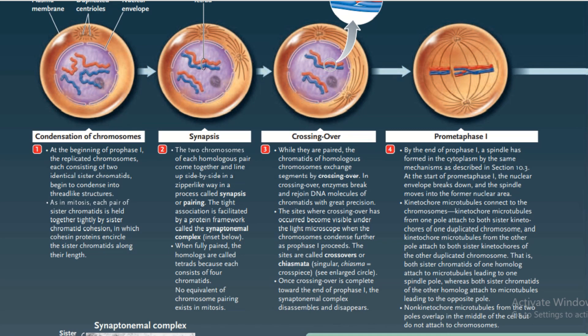The sites where crossing over has occurred become visible under the light microscope as chromosomes condense further in Prophase I. These sites are called crossovers, or chiasmata. Once crossing over is completed, towards the end of Prophase I, the synaptonemal complex disassembles and disappears. In summary, Prophase I involves condensation of chromosomes, synapsis, and crossing over.